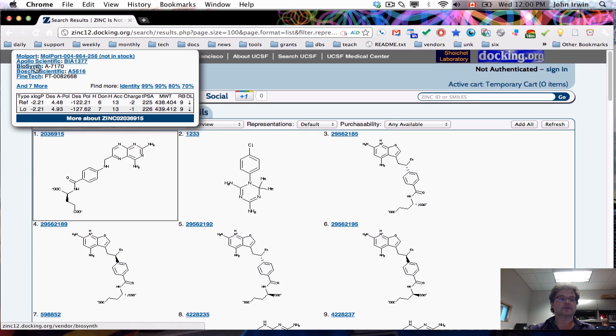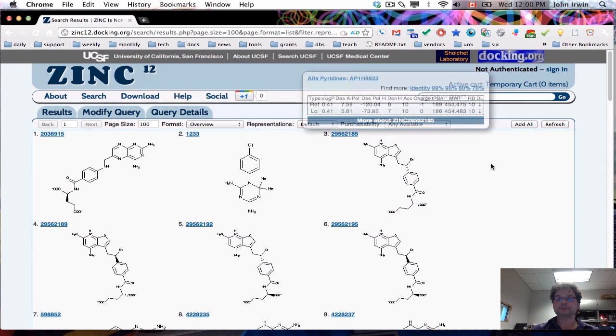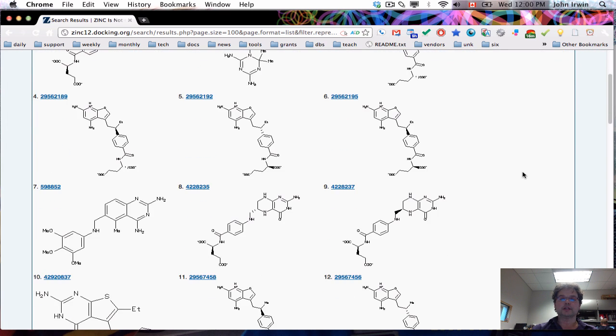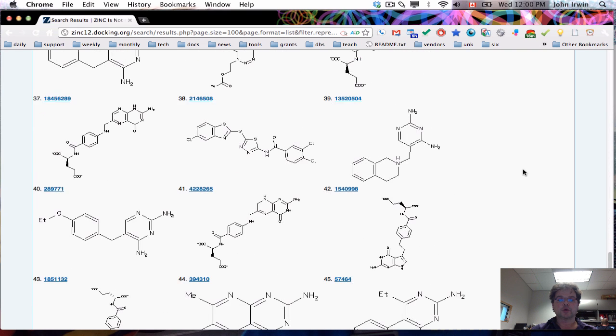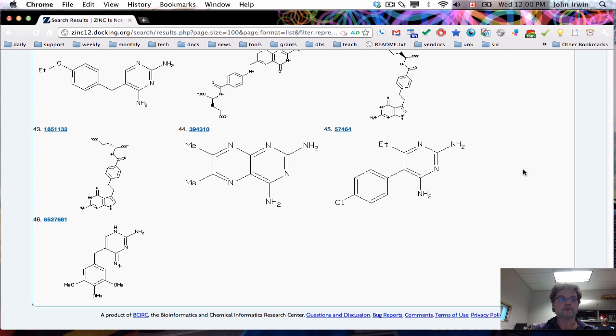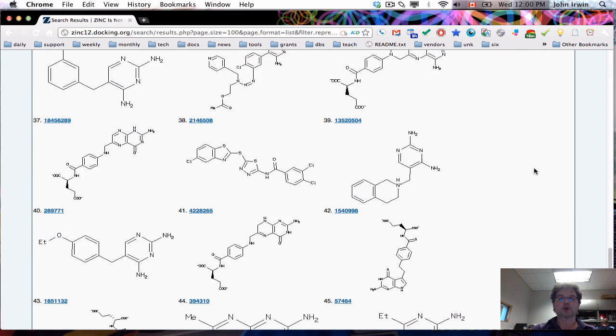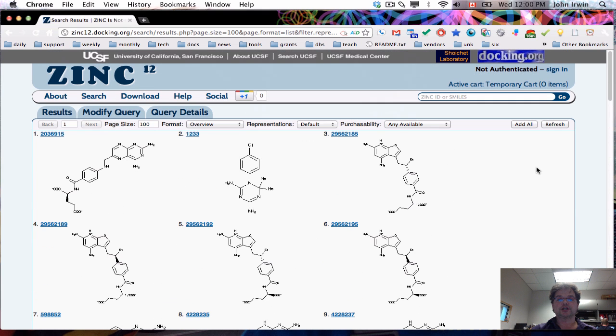You can see for instance the different vendors - there's more than seven vendors that sell this compound. Now scrolling down we can see that there are a total of 45 to 46 compounds that you can purchase for human DHFR and that's the simplest way to get them.